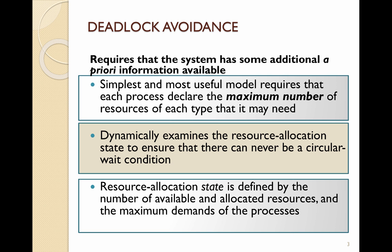The simplest way is for each process to indicate the maximum number of each resource that it needs. The system then allocates these resources in a way that when a process finishes using a resource, it can be freed up and used by another process.